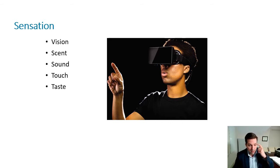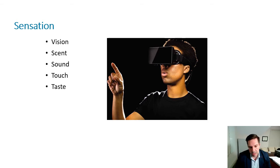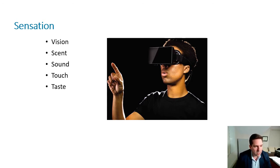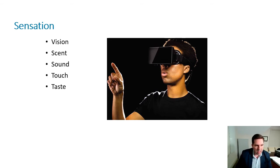A fun fact: if you try to quantify information in bits, most of the information we get bombarded with is visual — images. Because of their nature, images have high resolution and a lot of information, taking up quite a bit of our processing power. Upwards of 80 percent of all information that comes to you is actually through your eyesight.